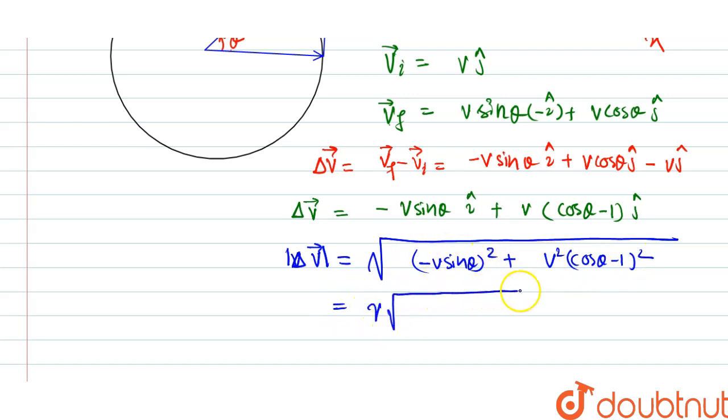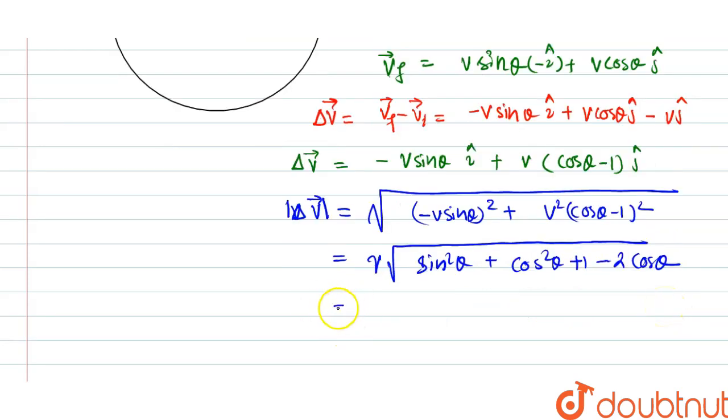Now this is v into root of sine square plus cos square is 1 always, so 1 plus 1 will be 2, 2 into 1 minus cos theta. We know that 1 minus cos theta is nothing but 2 into sin square theta by 2.